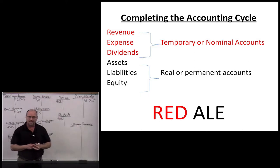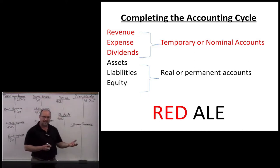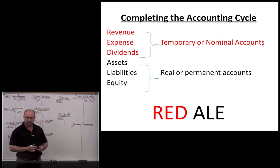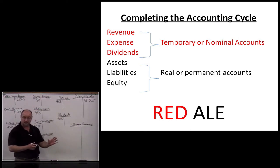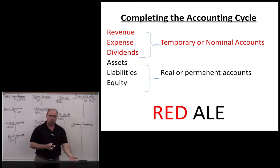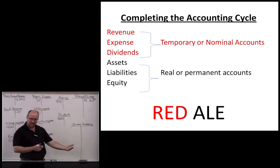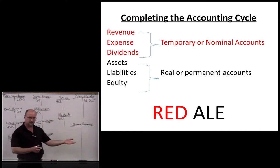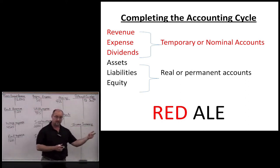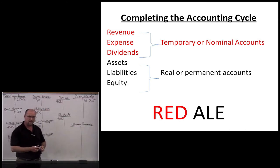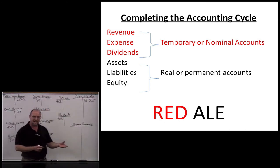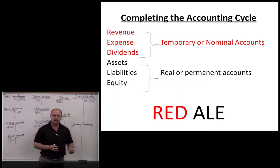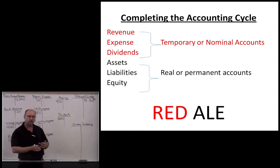Third, we take the end-of-period balance in each T-account in the general ledger, which is at the bottom. Remember the normal debit and credit balances? Assets have a normal debit balance. Liabilities have a credit balance. Equity accounts have a credit balance. Revenue accounts, credit balance. Expense and dividends, debit balance. We take the ending balance for the month, the quarter, the year, and we prepare a trial balance. That's the third step.